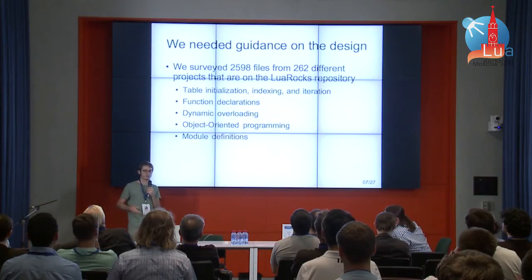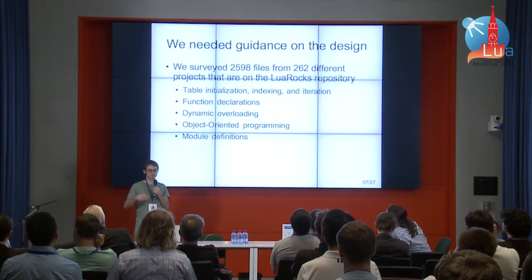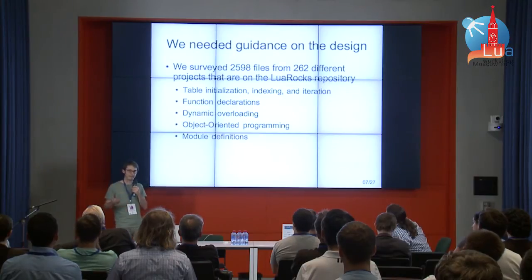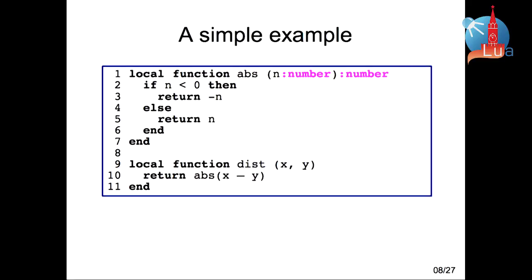We surveyed Lua files from the LuaRocks repository, trying to figure out how programmers are using Lua features — how they are using tables, declaring functions, doing dynamic overloading, object-oriented programming, and defining modules. Here is the first example of TypedLua code. Throughout this presentation, I will use pink color to mean all the syntactical extensions that TypedLua introduces to Lua. In this example, we are annotating the function ABS, both on the input parameter and on the return type, and we are not annotating the function dist.